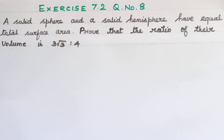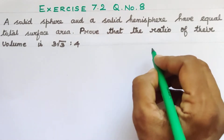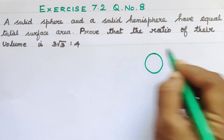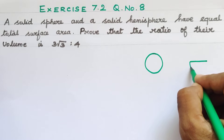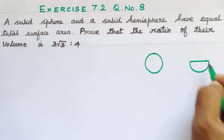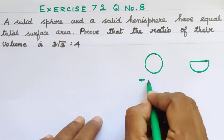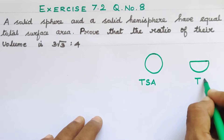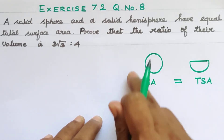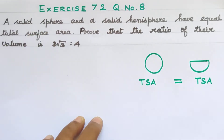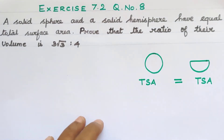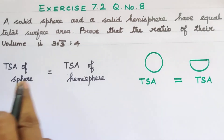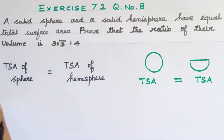Let's start from the given statement. We have a solid sphere and a solid hemisphere. Both shapes have separate TSA formulas, and we need to know those formulas. For the sphere's TSA formula — since they don't need to be equal radii, we denote the sphere's radius as R1 and the hemisphere's radius as R2.